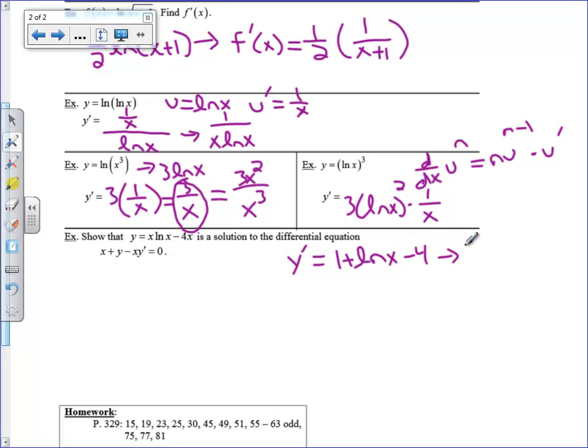So if you clean this up, you're going to get negative 3 plus the natural log of x. So let's see if this all works out to be 0. x plus y, and I'm going to write that as x natural log of x minus 4x. So this is all y, then minus x times y prime. Here was y prime. I'm going to multiply that times x.